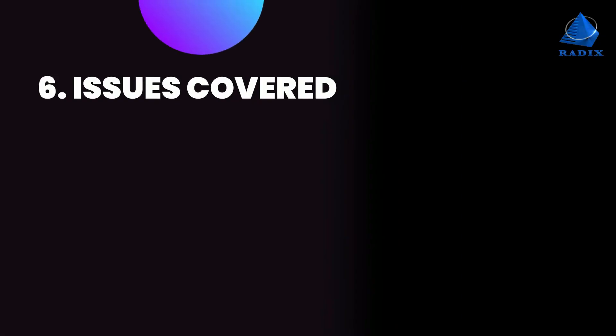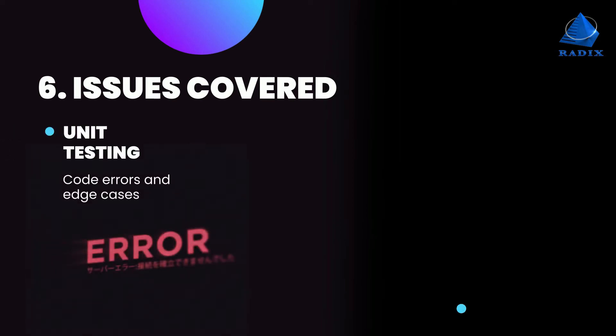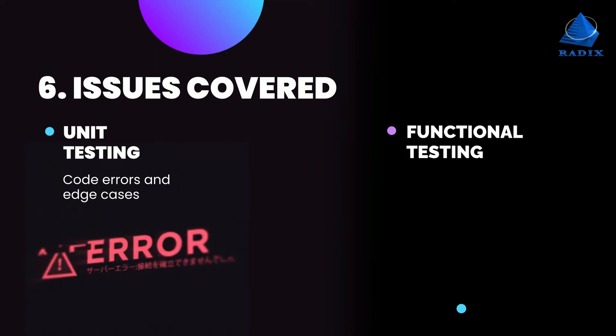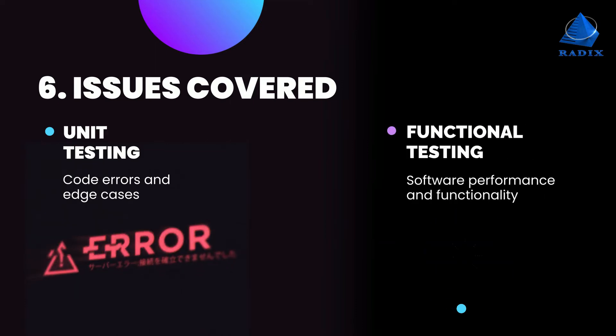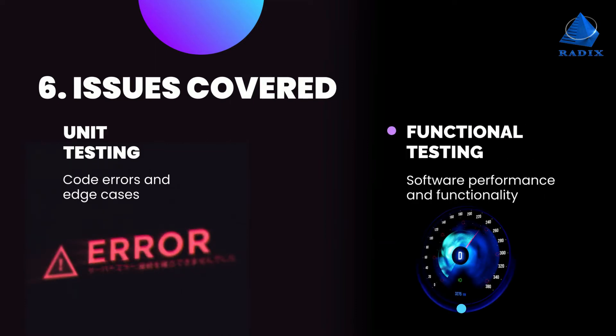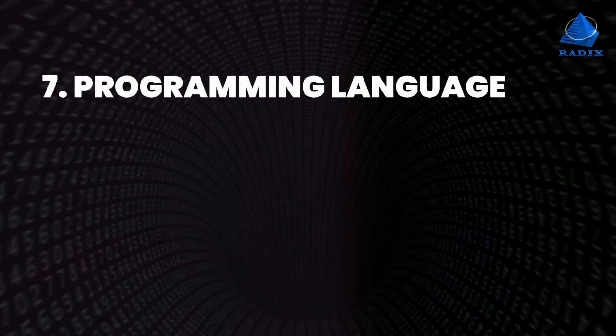6. Issues Covered: Unit testing covers code errors and edge cases. Functional testing covers software performance and functionality.